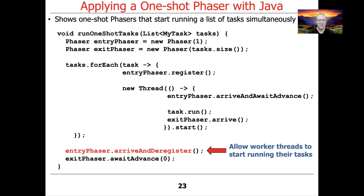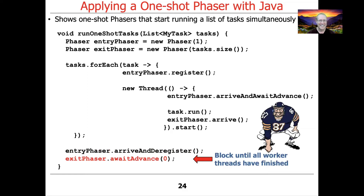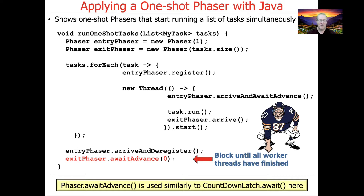By arriving and deregistering, the calling thread essentially lets all the other threads waiting inside the lambda expressions in the arriveAndAwaitAdvance method get a chance to start running when they all reach that point. The other thread then continues to its next step, which is to call the exit phaser's awaitAdvance method, passing in zero — since we start out in phase zero. This is basically saying: go ahead and wait until the other threads are done calling arrive, at which point they will advance to the next phase. We're essentially using this to block until all the worker threads have finished — the awaitAdvance method is being used similarly to the CountDownLatch await method.